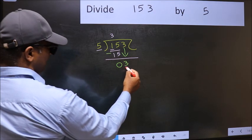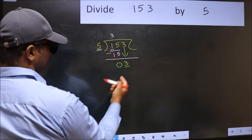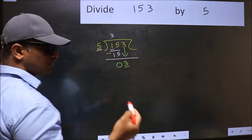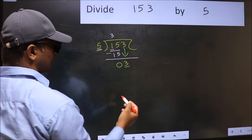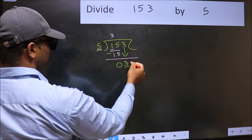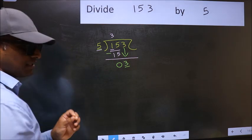Here we have 3 and here 5. 3 is smaller than 5. So what many do is they directly put the dot and take 0, which is wrong.